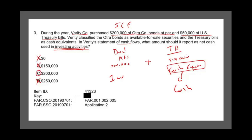The bond classified as available for sale is a form of investment, so A is out. There's no reason to subtract the two — they are different items — so B is out. The answer is C: $200,000, because buying bonds of other companies is an investing activity. This topic is covered in my intermediate accounting course, chapters 5 and 23. Statement of cash flow is heavily covered because it's very important on the CPA exam.